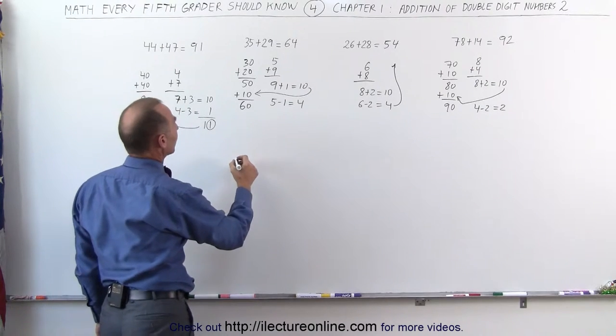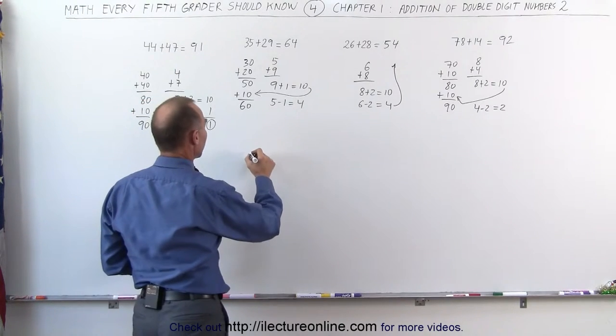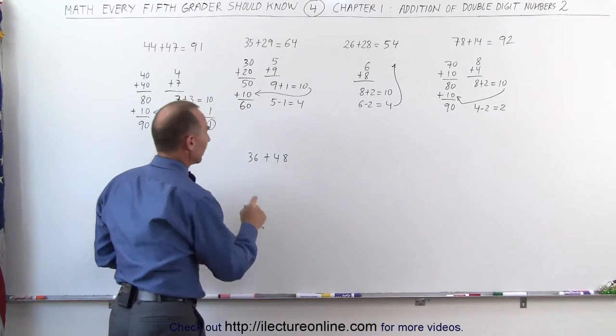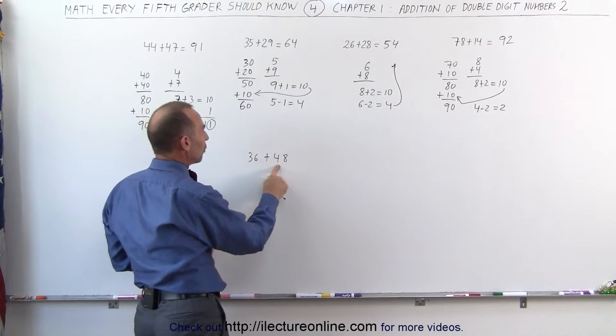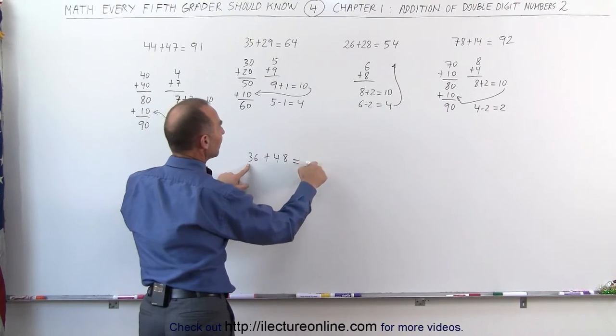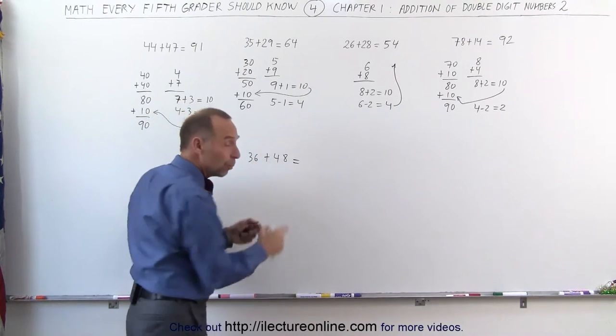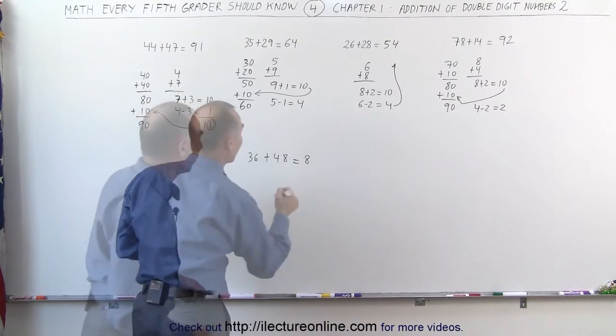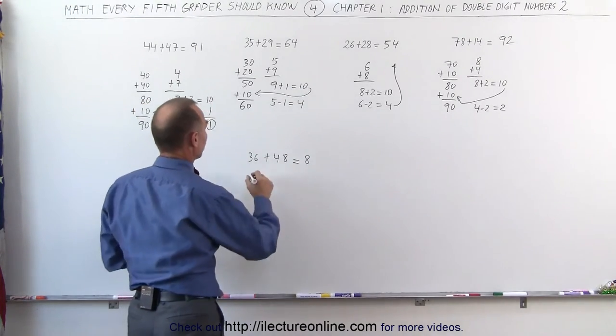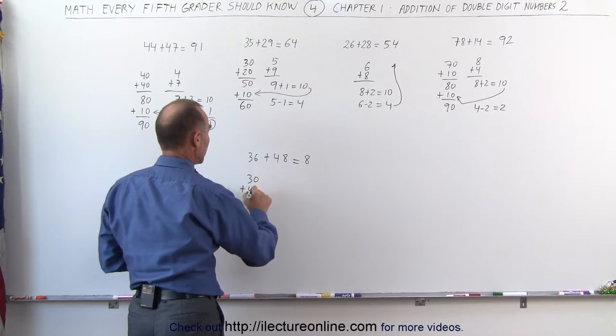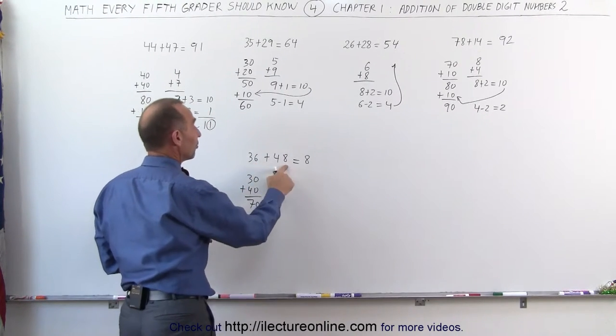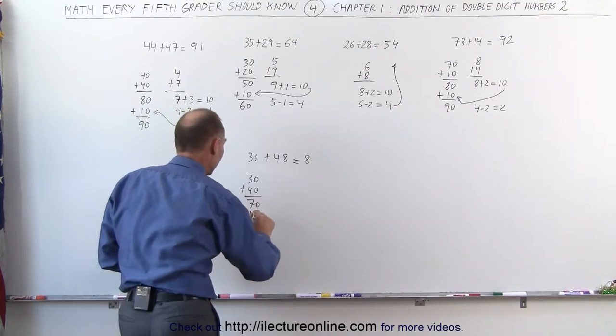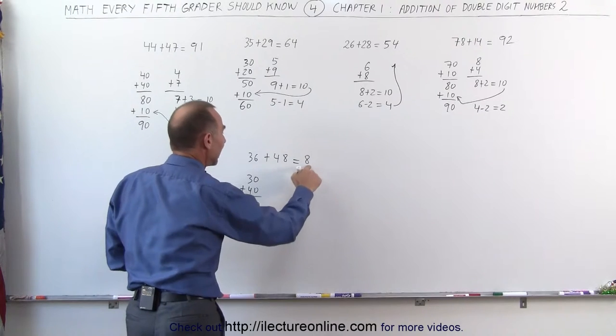Now, let's try 36 plus 48. Here you notice that 30 plus 40, 3 plus 4 would give me 70. However, since 6 plus 8 is more than 10, we need to add another 10 to that. That becomes 80. What did we just do? We took the 30 plus the 40, that gave me 70. But realizing that 6 plus 8 is going to be more than 10, I take another 10 and add that to the 70 to give me 80.